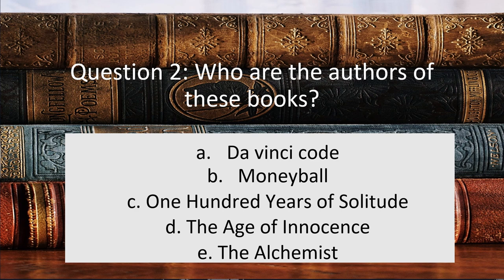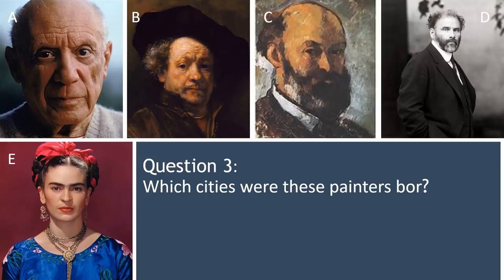Moving on to question number three: which cities were these painters born in? We have A, the first one which is a little bit hidden, B, C, D — which also seems a bit hidden — and E.